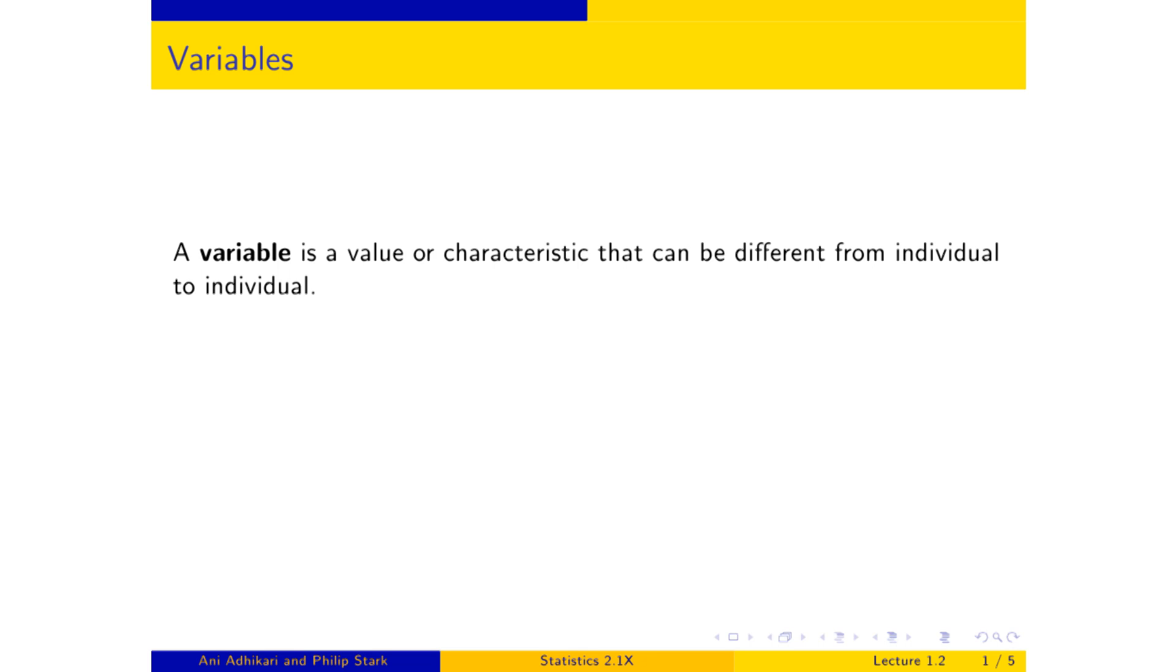For example, if you ask a group of people their favorite color, you'll get answers that vary. Ages. Population. Now here, the individuals are not people. The individuals are cities or countries or some regions. Individuals don't have to be people.